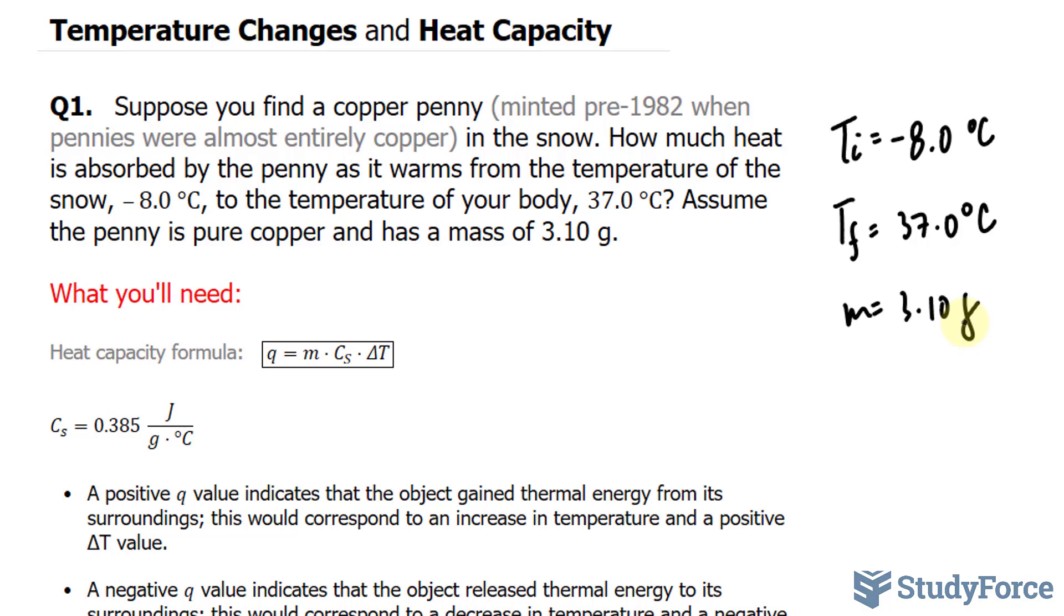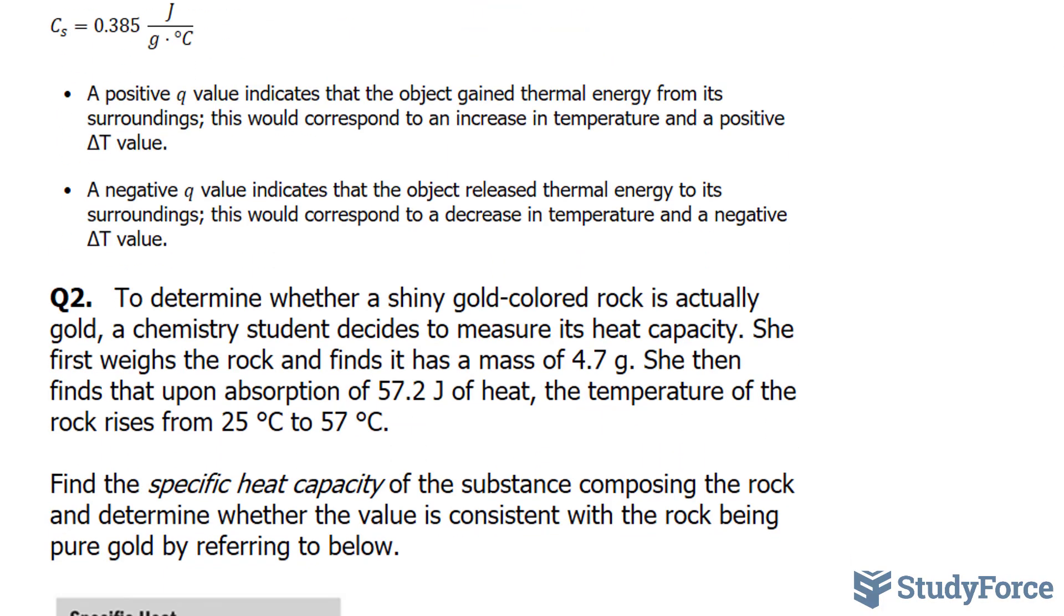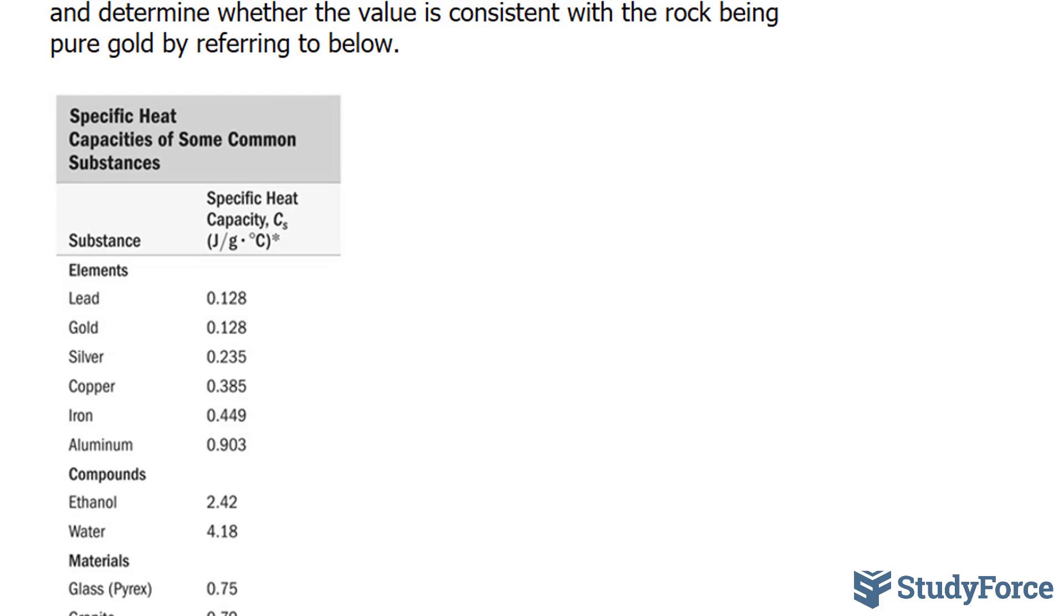Now, to find out the amount of heat absorbed, we'll be using this formula right here, where the heat capacity formula is defined as Q equals the mass M times C sub S, where C is a constant which can be found in the table here. This constant specifies the specific heat capacity of common substances.